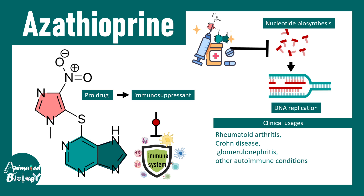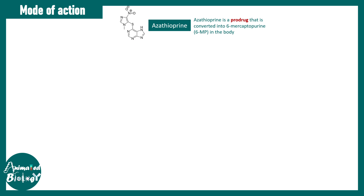Azathioprine is clinically used to treat rheumatoid arthritis, Crohn's disease, glomerulonephritis, and other autoimmune conditions. It is even a drug of choice after kidney or organ transplant. It is notably a preferred drug for systemic lupus patients who are pregnant.